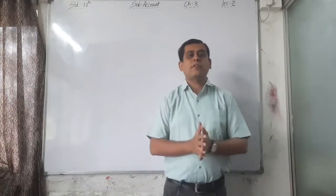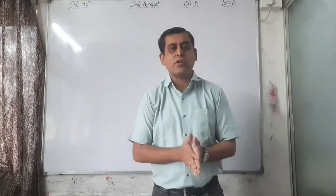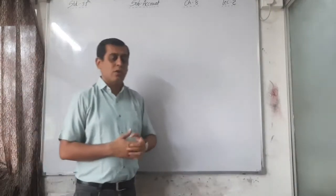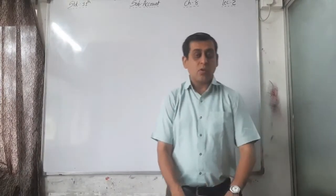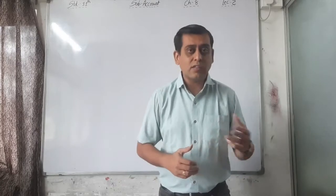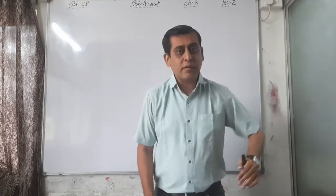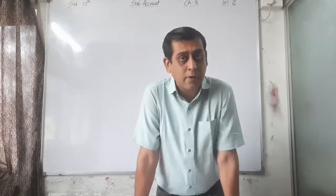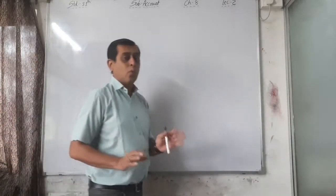Hello, good morning students. Welcome back to our e-learning session. This is your second lecture of chapter number eight, journal proper. In our last session we covered illustration number one and the general theory about journal proper — the types one, two, three — that is transactions not included in the other subsidiary books. We also discussed the sub-parts, and completed illustration number one.